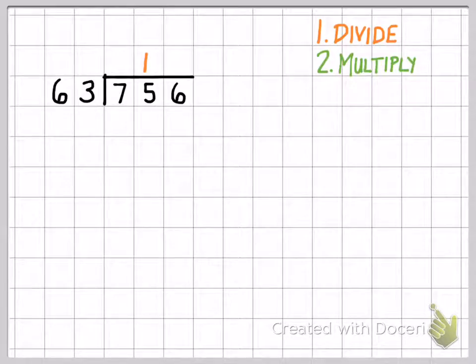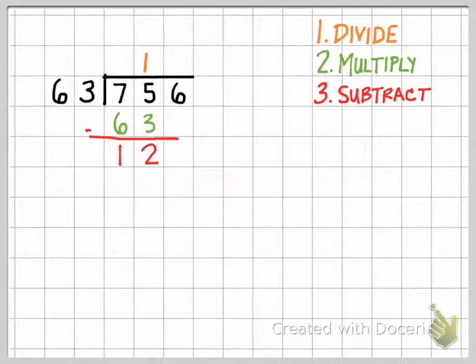The next step that I do is to multiply. I take the number at the top, the 1, and I actually multiply it out. So it's going to look like 1 times 63. When I do that, 1 times 63 is 63. Then I'm going to subtract. 75 minus 63 is 12.